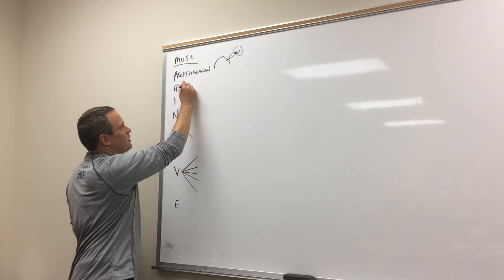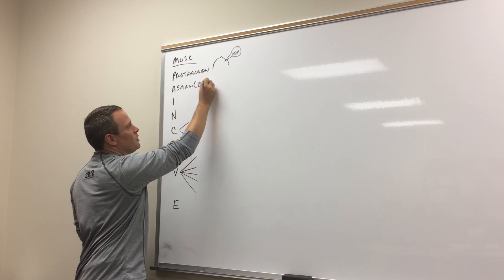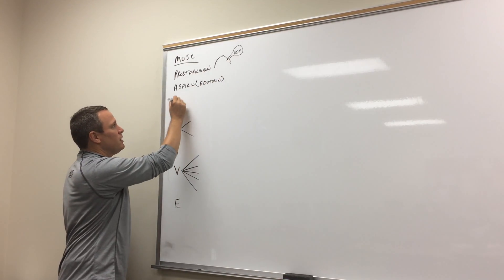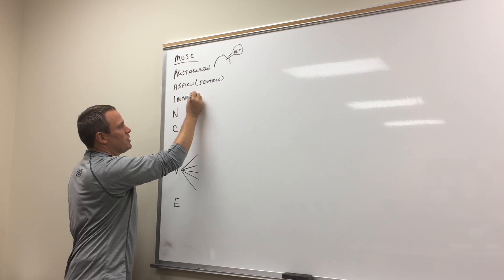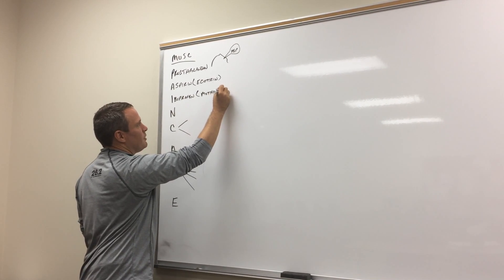So we'll start with the NSAIDs, like aspirin. There are as many brand names that you can use, but we'll use Ecotrin, which is enteric-coated aspirin. You've got ibuprofen, which is another OTC, and this is Motrin or Advil.